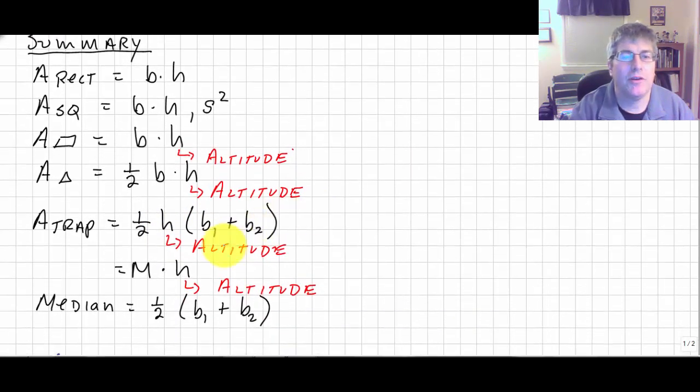Area of a trapezoid can also be calculated by median times height, or the median is the average of your two bases, or one-half base one plus base two.